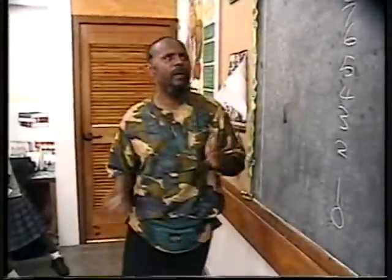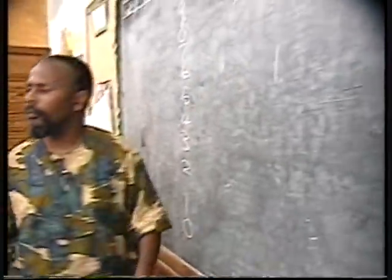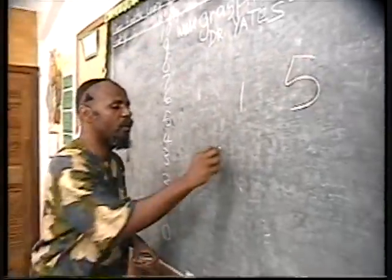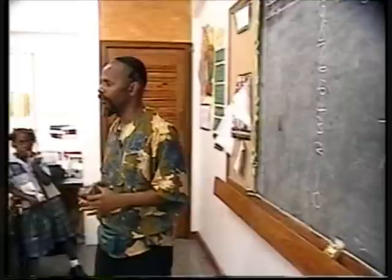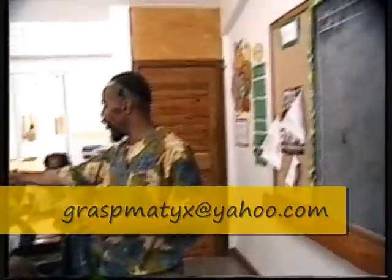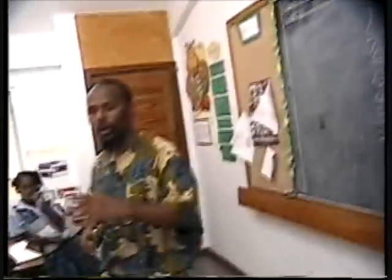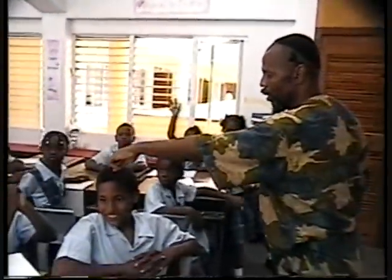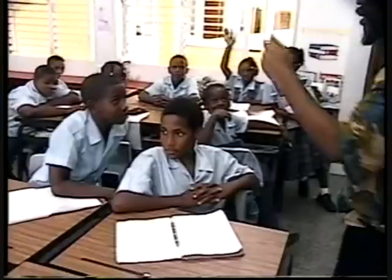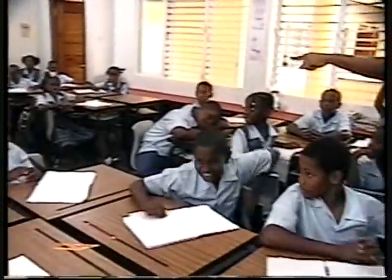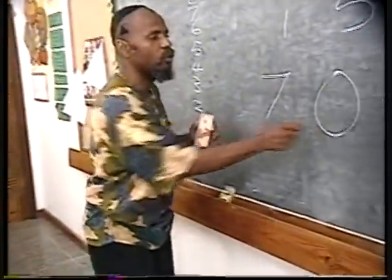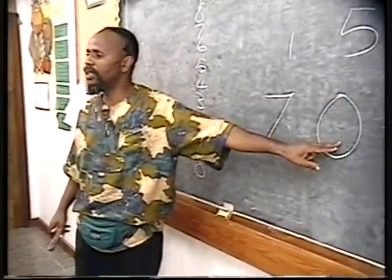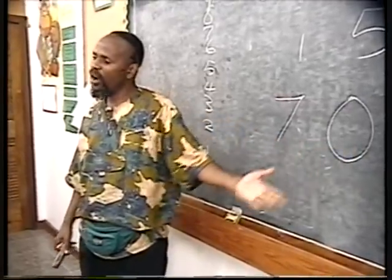Now let me tell you something about zero. Listen to me carefully. What number is this? One. What number is this? Five. What number is this? Seven. What number is this? Zero. Now — what does zero mean? Students respond: nothing. But wait — you just told me it was a number called zero. So how are you going to call it nothing when you told me it's a number?